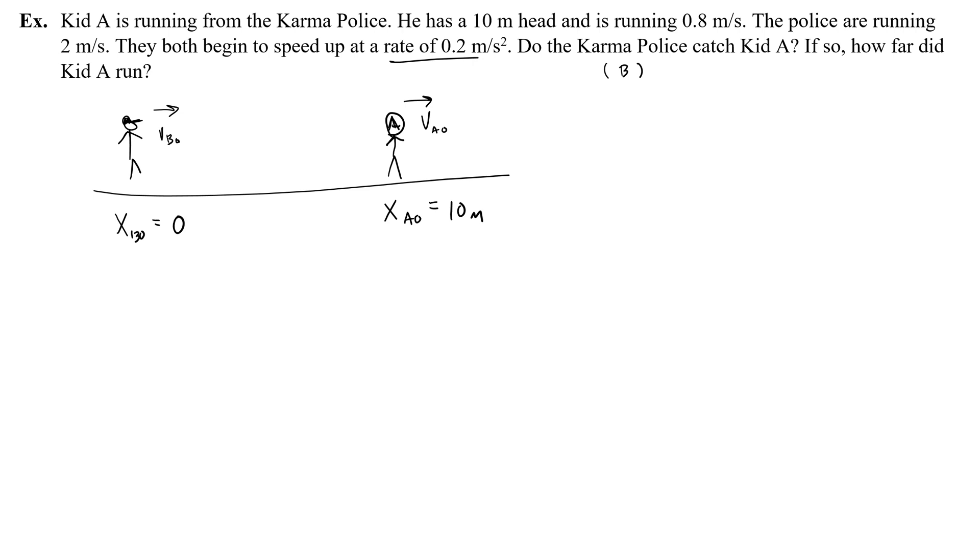You would say the initial velocity of A, initial velocity of B. And let's deal with their positions. So the initial position of B, the initial position of A. Kid A has a head start of 10 meters, so we'll write 10 meters. And let's say that the Karma Police then start at zero. And then the initial velocities of A, so the initial velocity of Kid A is that 0.8 meters per second. And the velocity of the Karma Police, 2 meters per second. They would both be positive since they're both going in the same direction. They're not running at each other.